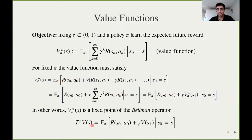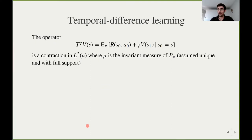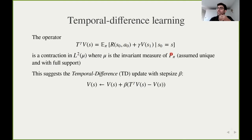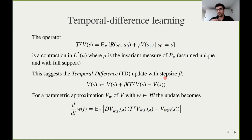The Bellman operator can be applied to any approximate value function v, and the natural question is whether this operator is a contraction. This turns out to be the case: the Bellman operator is a contraction in the L2 space with respect to the invariant measure of the dynamics. This makes a sensible update in function space the temporal difference update, which is simply an infinitesimal update in the direction pointed by this operator in function space. When the state space is large or infinite, we must parameterize the value function as a parametric family and project this update into parameter space.